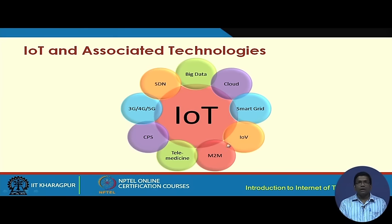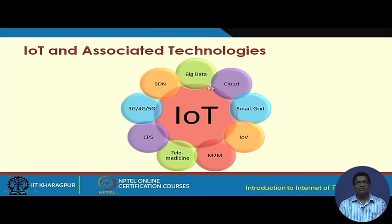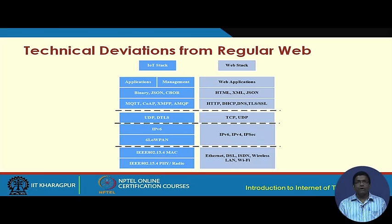Different associated technologies of IoT include big data, cloud computing, smart grid, Internet of Vehicles — where vehicles on the road are fitted with IoT devices that communicate with one another to share road traffic intelligence and roadside services. We also have machine-to-machine communication, telemedicine, cyber-physical systems (CPS), 3G/4G/5G networks, and SDN — all used together to deliver IoT solutions.